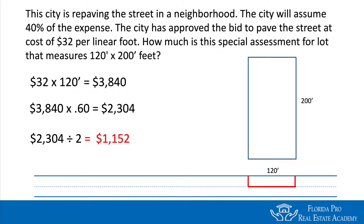Taking $2,304 divided by two gives us $1,152. That is the special assessment for a lot measuring 120 feet by 200 feet at $32 per linear foot, with the city assuming 40%. Follow this breakdown — it makes the problem very easy. One caution: if you forget to divide by two, the answer $2,304 will also appear as a trap answer on the test, so make sure you divide by two to get $1,152.